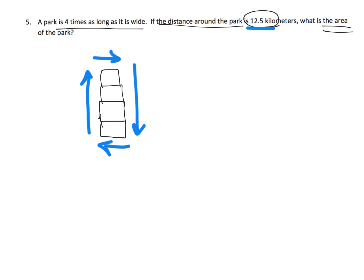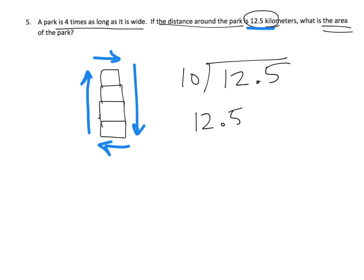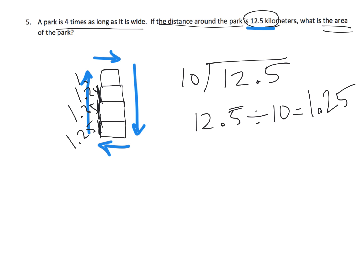So how many units did we walk? Four plus one is five, plus four more is nine, plus one is ten. So we walked ten units around the block. That means 12.5 divided by 10 — and we know 12.5 divided by 10 from a previous module equals 1.25. So each little unit is 1.25, and we're going to have ten of them.